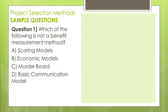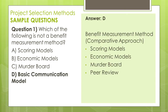What do you think? The answer is D, Basic Communication Model. Benefit measurement methods, or in other words, the comparative approach, consists of four models. These are Scoring Models, Economic Models, Murder Board, and Pair Review.